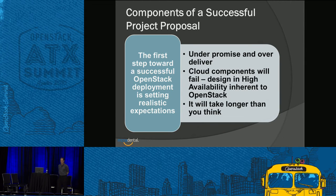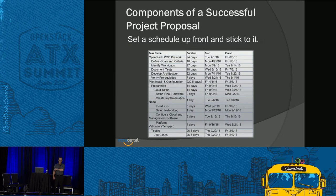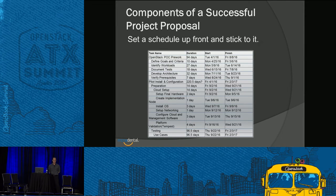The first step toward a successful OpenStack deployment is setting realistic expectations. Under-promise and over-deliver. Cloud components will fail and you'll need to design for high availability. It will take longer than you think. Set up a schedule up front and stick to it — from the very first sandbox all the way out to production deployment. Be very conservative when choosing your dates and how much time each step will take.